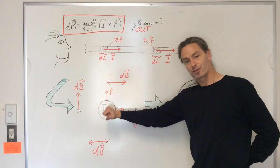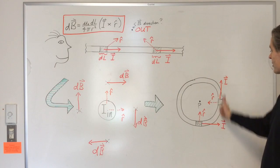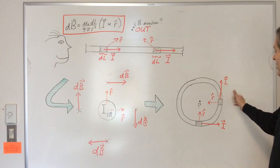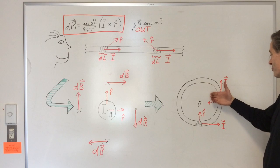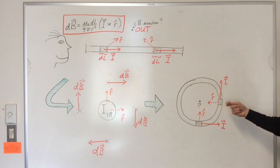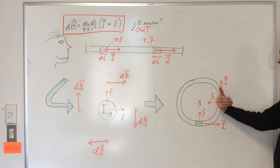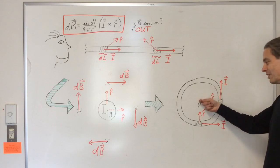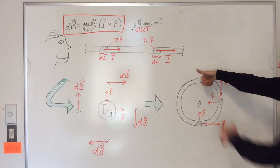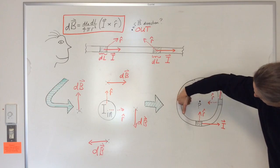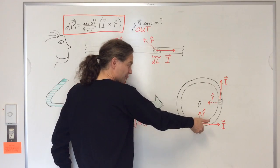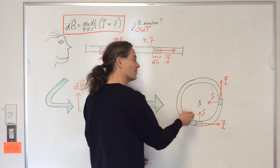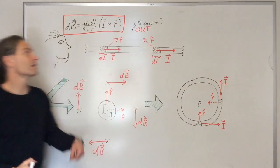We could also use the shortcut right-hand rule developed for straight wire segments. For example, for a small segment at the top of the loop, stick your thumb in the direction of that little current segment, fingers wrap around — at the center of the loop the magnetic field is coming out. Doing this for each segment around the loop: current this way — field out; current going down — field out; current going the other way — field out. Using this shortcut for each little segment, we get that the field at the center is out of the board, just as we got from the original right-hand rule.